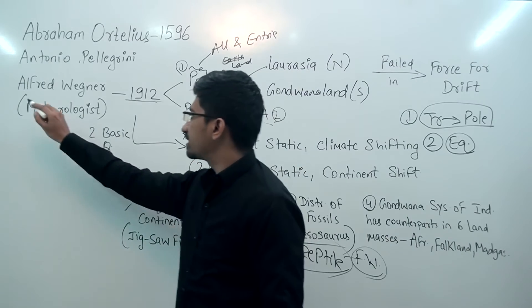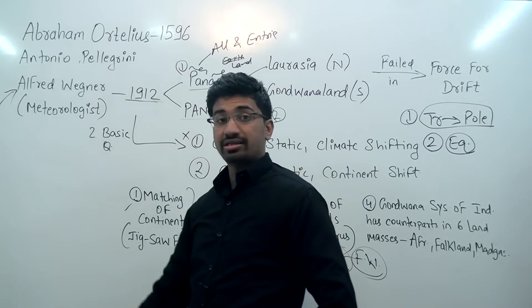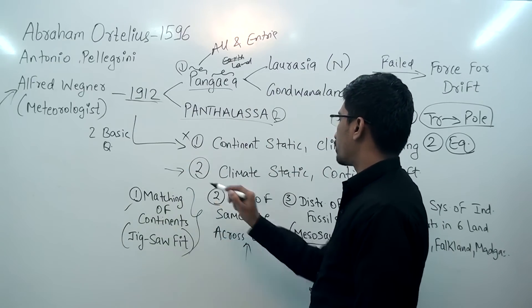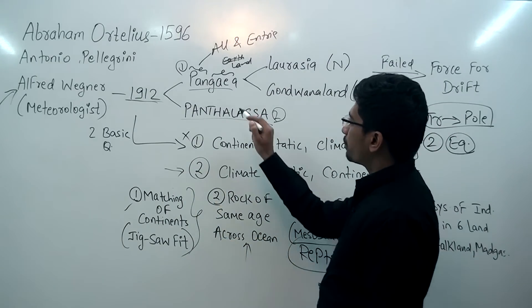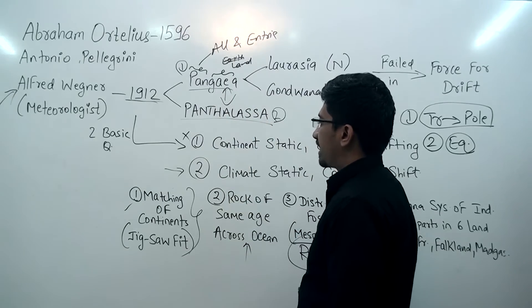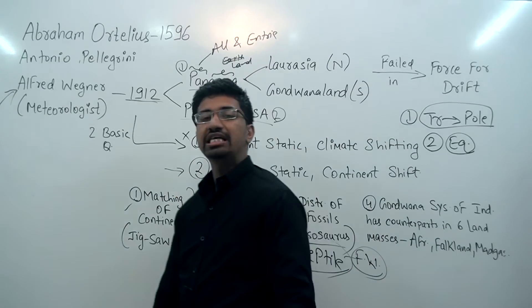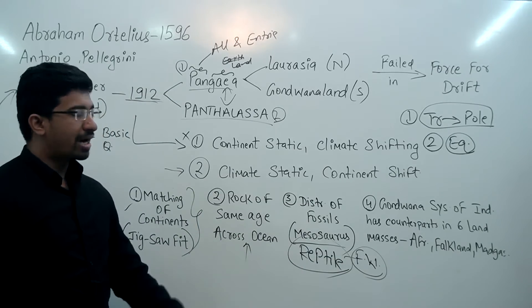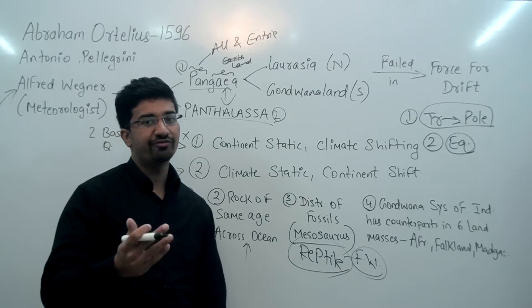When these two basic questions came to Alfred Wegener's mind, he started searching for answers, which led him to the conclusion that the climate strategy is unchanged but continents had moved. He proposed the theory, divided the whole earth into Pangea and Panthalassa, and proved it with the help of these four proofs. But the next question is where Alfred Wegener failed.